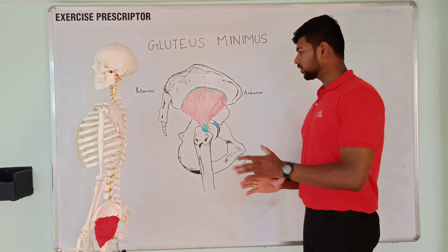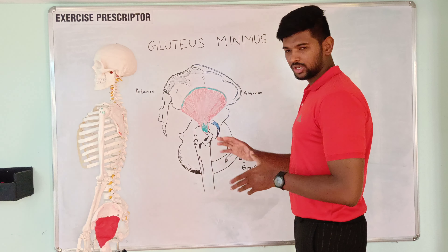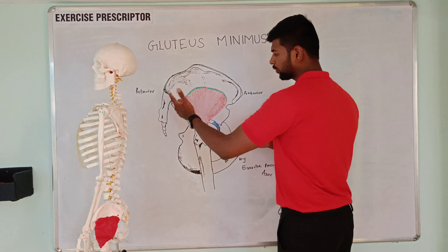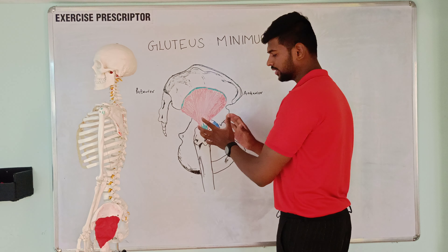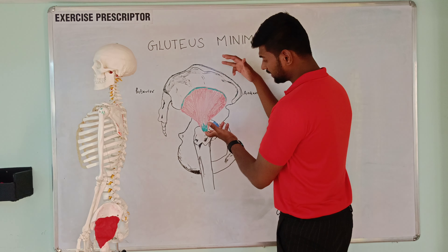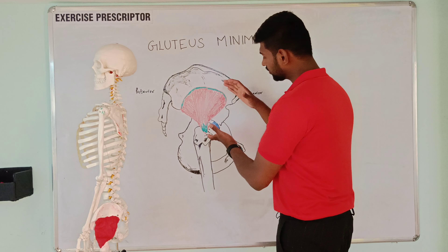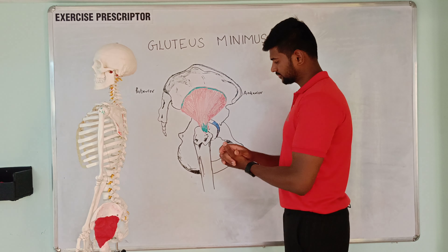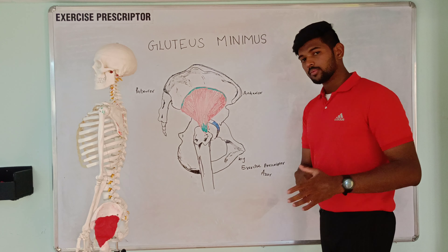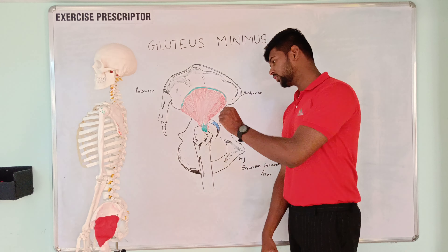First, gluteus medius is larger than gluteus minimus and it fans out more anteriorly and posteriorly, covering the hip joint. Mainly, the gluteus medius muscle creates a larger muscular momentum than gluteus minimus, so the gluteus medius muscle is more powerful than gluteus minimus.